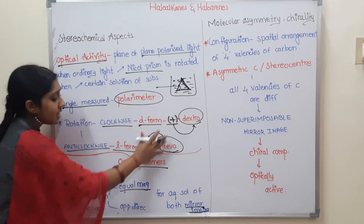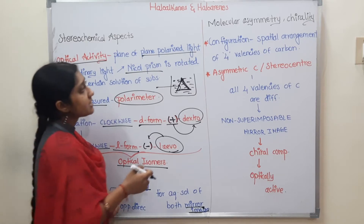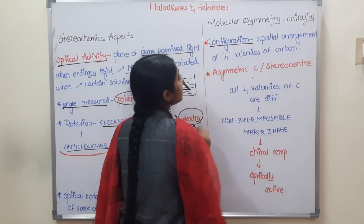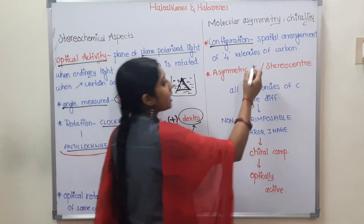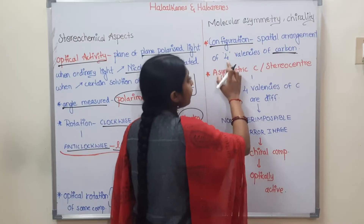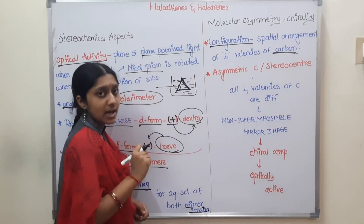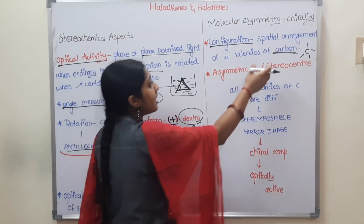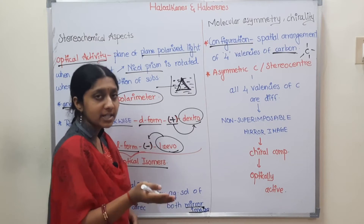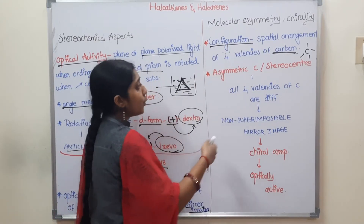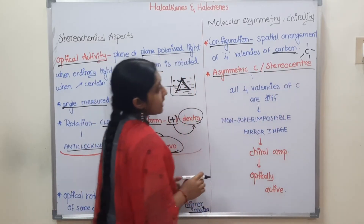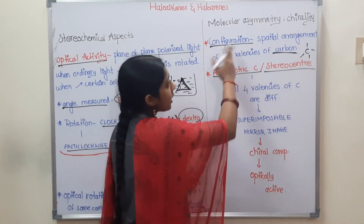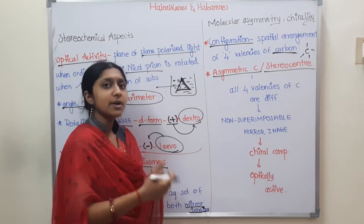Next is molecular asymmetry and chirality — an important topic. What do we need to know about configuration? The spatial arrangement of the 4 valencies of carbon — carbon has 4 valencies. How those 4 valencies are spatially arranged is called configuration. An asymmetric carbon, also called a stereo center, is very simple to understand.